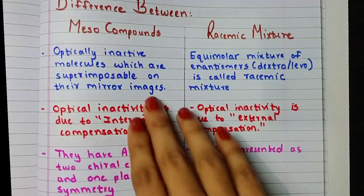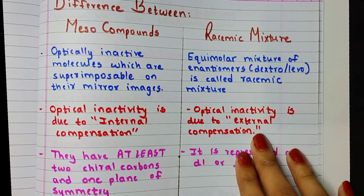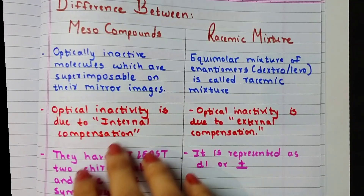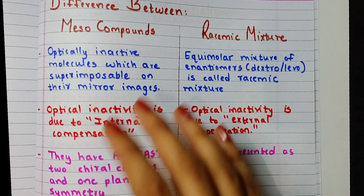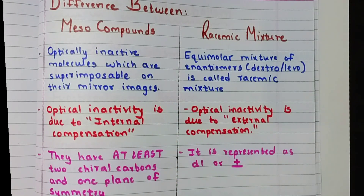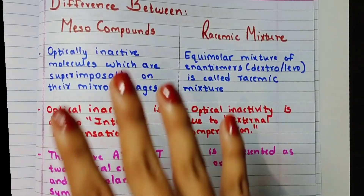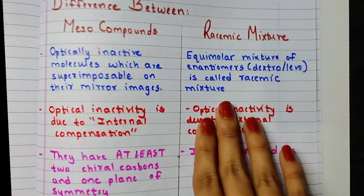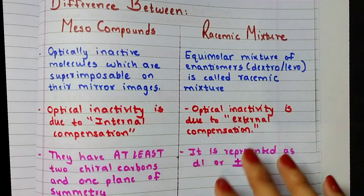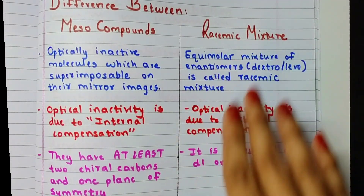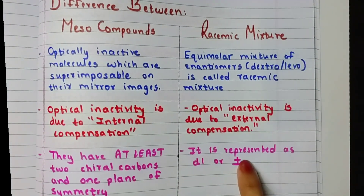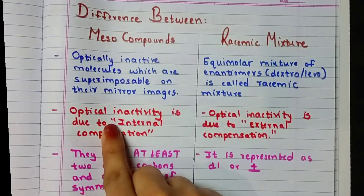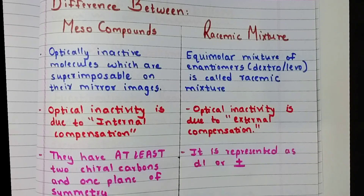The second point: in meso compounds, optical inactivity is due to internal compensation, whereas in racemic mixtures it is due to external compensation. Internal compensation means that within the molecule, the optical activity of two different chiral carbons nullifies each other. External compensation means the optical activity is nullified by an external mixture of dextro and levo — 50/50 — as seen in the racemic mixture.